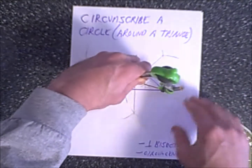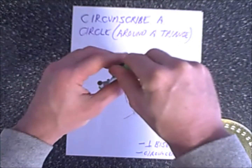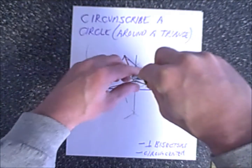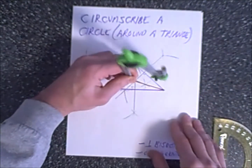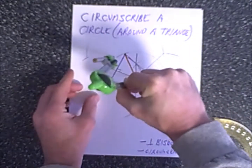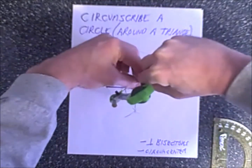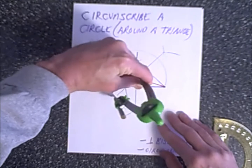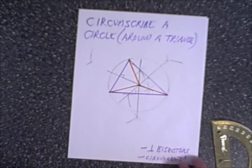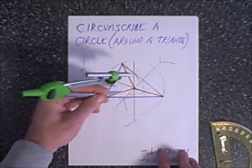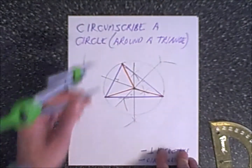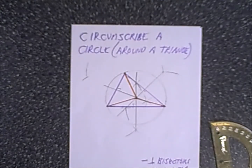So what we're going to do is get the compass set just right — making sure I get the right distance. Here we go, off this circumcenter. And there you have it. Using the circumcenter we created and our compass set to the length of one of the orange segments from the circumcenter to a vertex, you can see that we can draw a circle that circumscribes the triangle.